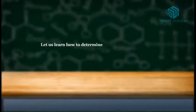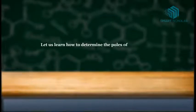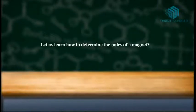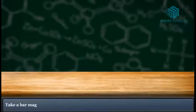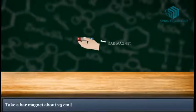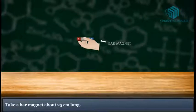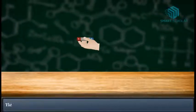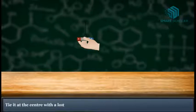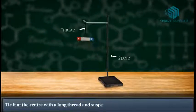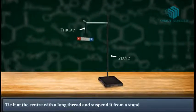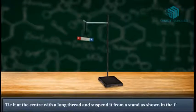Let us learn how to determine the poles of a magnet. Take a bar magnet about 25 cm long. Tie it at the center with a long thread and suspend it from a stand as shown in the figure.